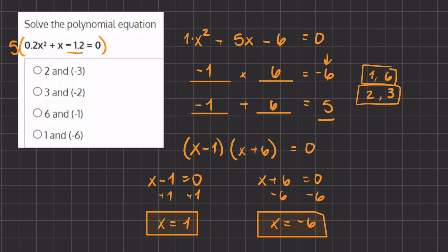The two values that our x can equal is positive 1 and -6. If we take a look at our answers, this corresponds with answer D, and therefore D will be our final answer.